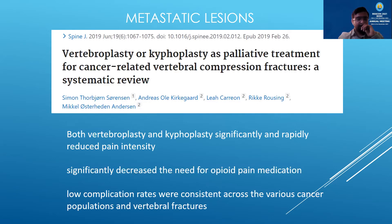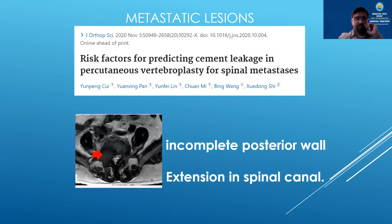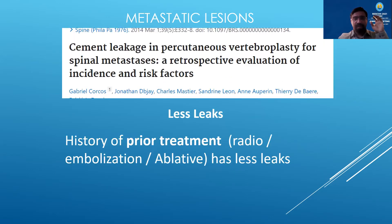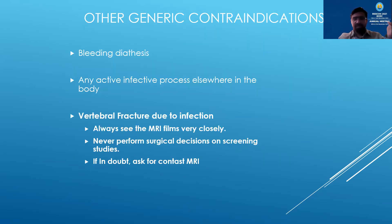In metastatic lesions, vertebroplasty overall has good results in pain alleviation and treatment of instability. However, those with posterior wall involvement or epidural extension will have cement leaks which can be dangerous. Fewer leaks are seen if the patient has had prior treatment with radio-embolization or some form of ablation, as the tumor has melted and left a vacuum that can be filled with cement. There are also other generic contraindications — importantly, you need to rule out a missed infection, as an MRI done only as screening may miss a very early infection. If in doubt, always do a contrast study before proceeding with vertebroplasty.